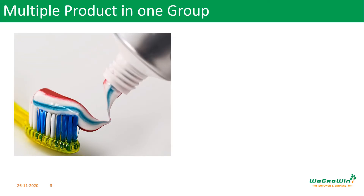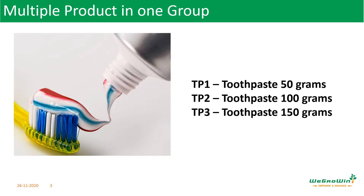For example, consider a toothpaste that may be produced in different SKUs: TP1 with 50 grams size, TP2 with 100 grams size, and TP3 with 150 grams size. When we want to plan the raw materials for this toothpaste, entering all these individual materials can take a lot of time. Also, when entering the sales plan for these materials individually, it may be difficult for the sales team. They will say, for example, per month we are going to produce 1000 or 2000 cartons.